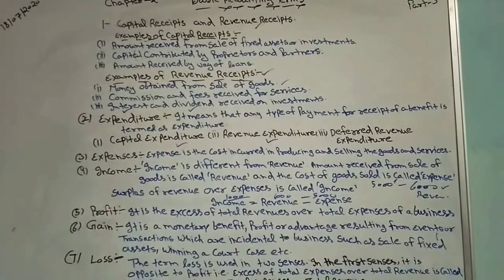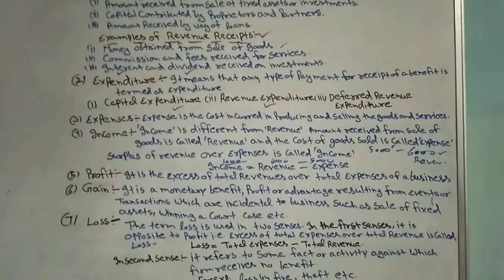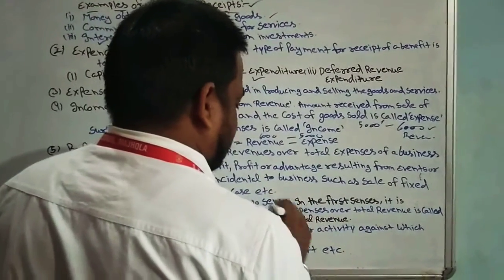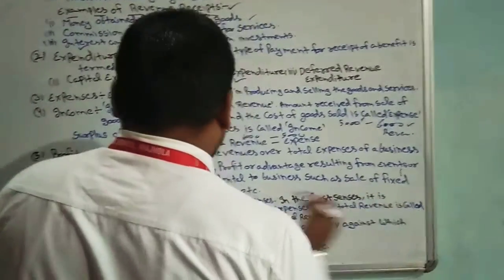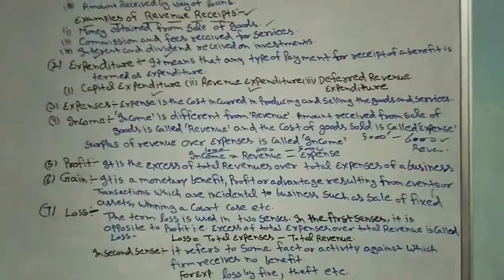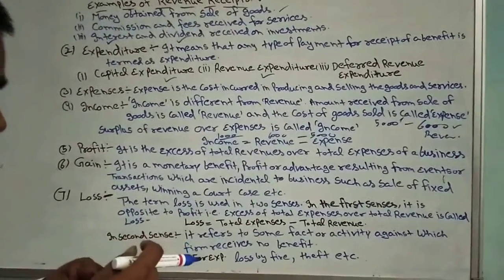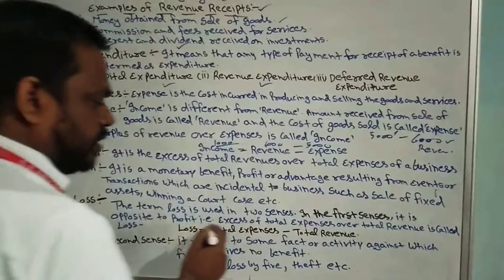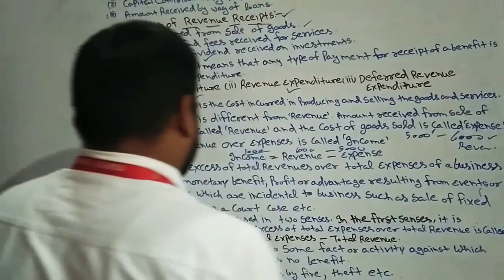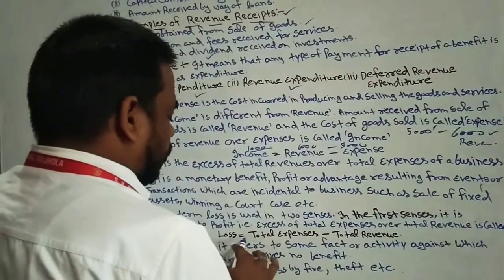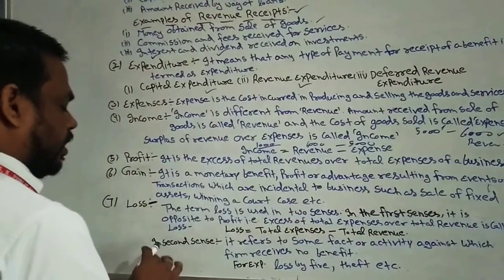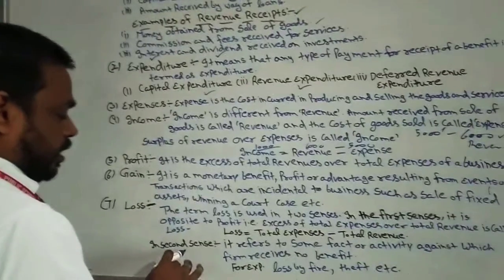The next point is loss. Loss is when total expenses exceed total revenue — loss is equal to total expenses minus total revenue. That is our loss. The next point is loss in the second sense.